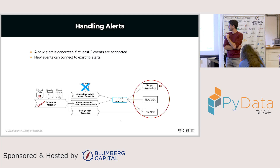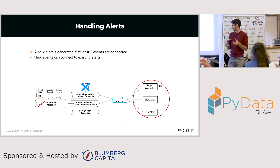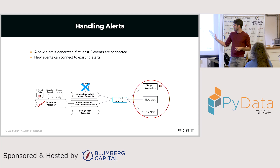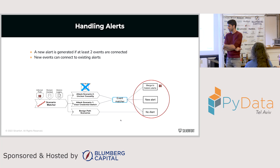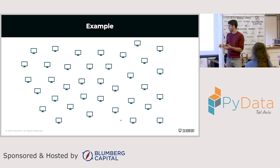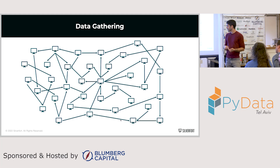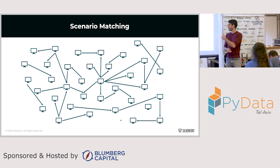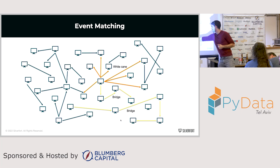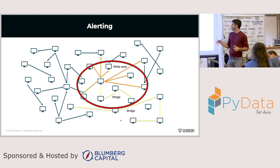For alerts: I throw a new alert when I see two events connected through the same computer. For example, if I have a Bridge (movement from A to B to C) and then see a White Cane on C, those two events are connected and I'll throw a new alert. If a new event connects to an existing alert, I merge them together. Walking through the full algorithm: collect data, filter out non-anomalous authentications in the enhanced scenario measure, look for events (a bridge here, a bridge there, a white cane here), then connect the events together.